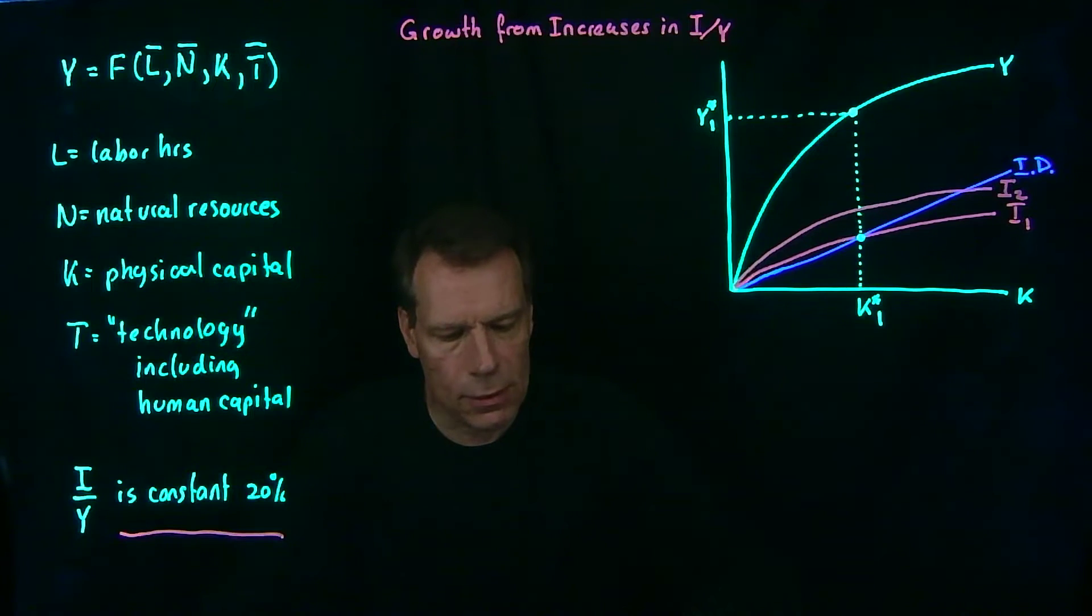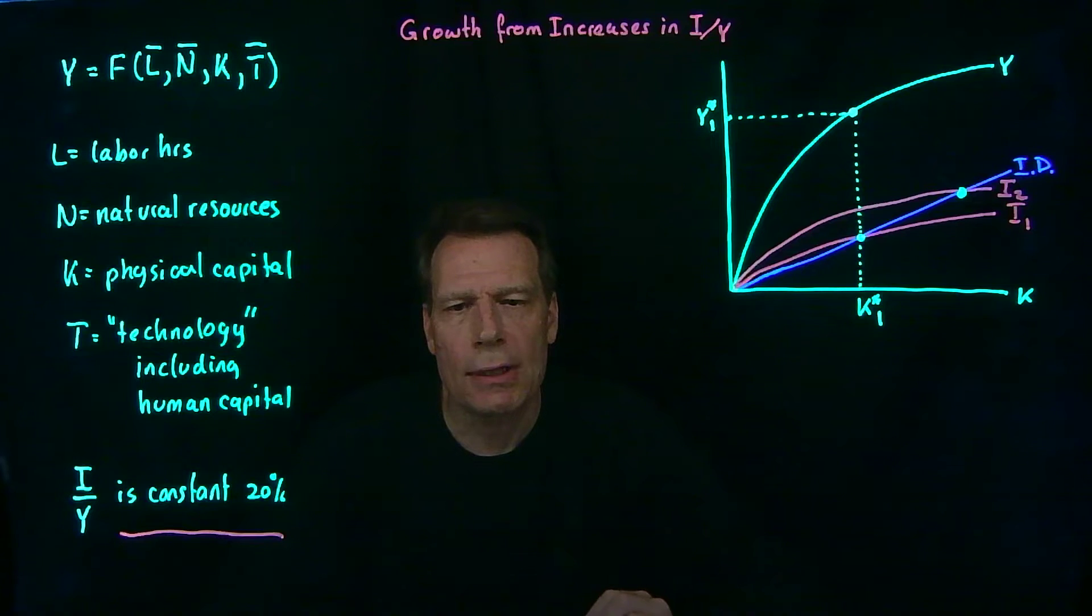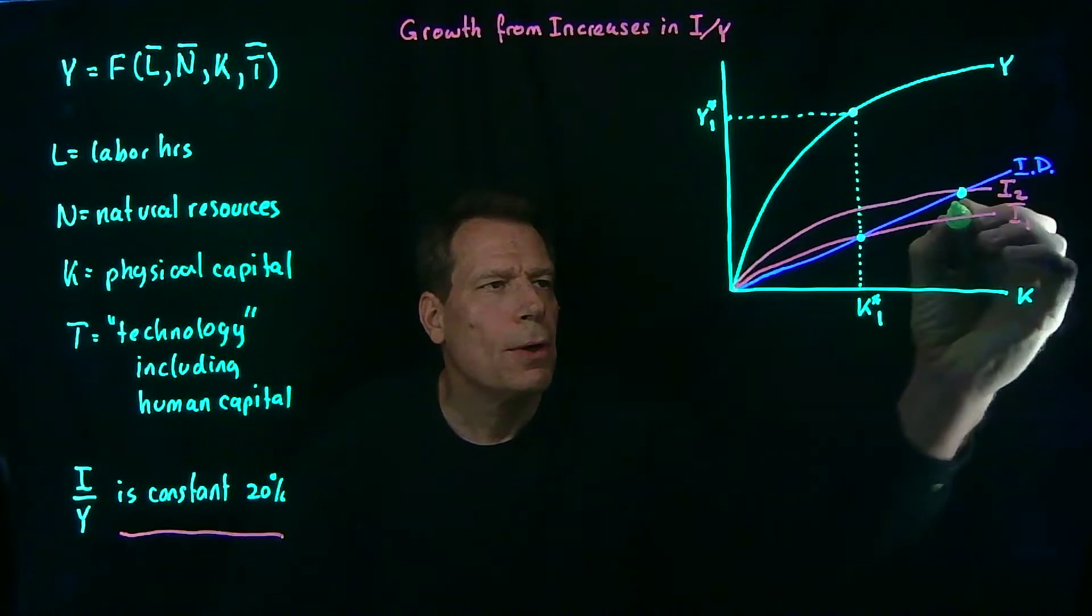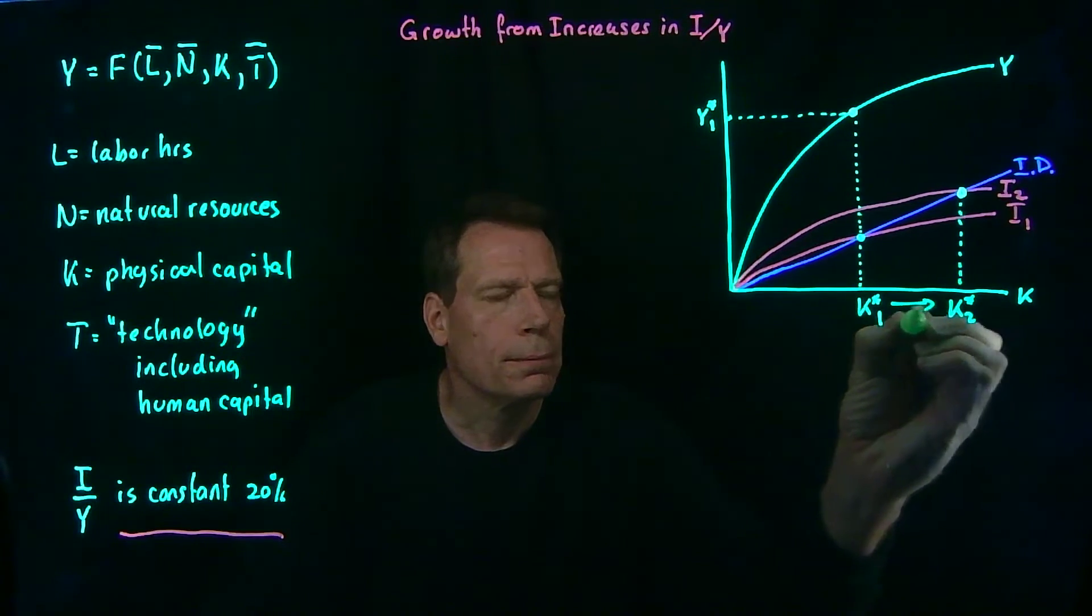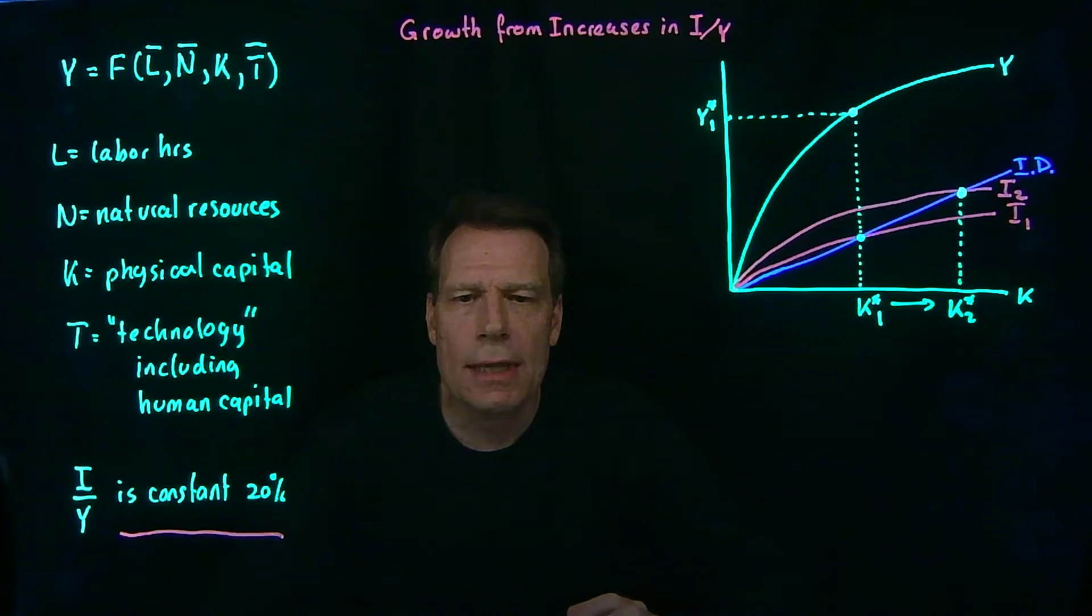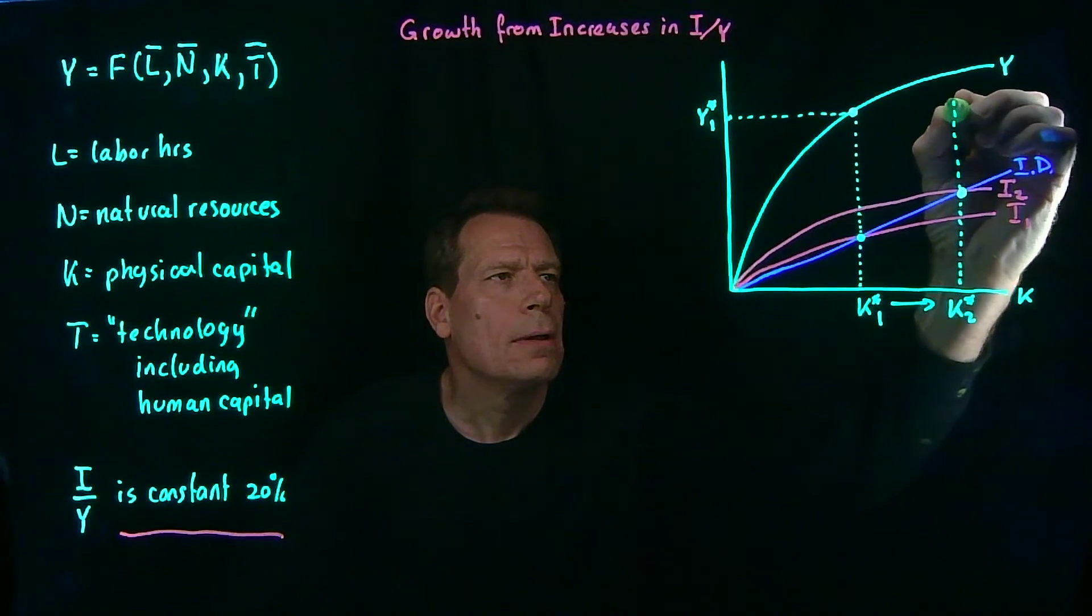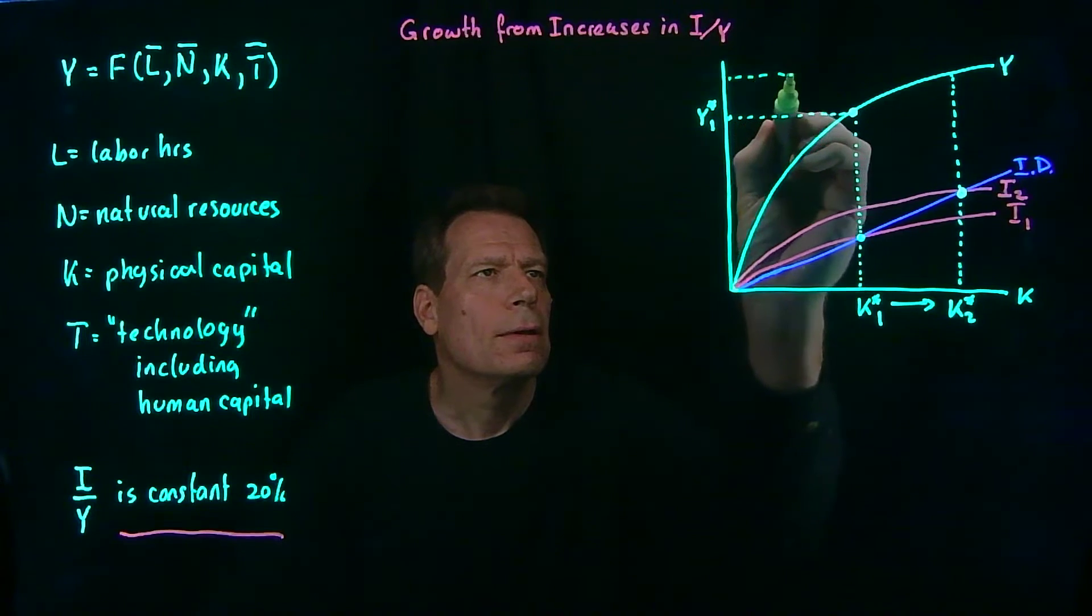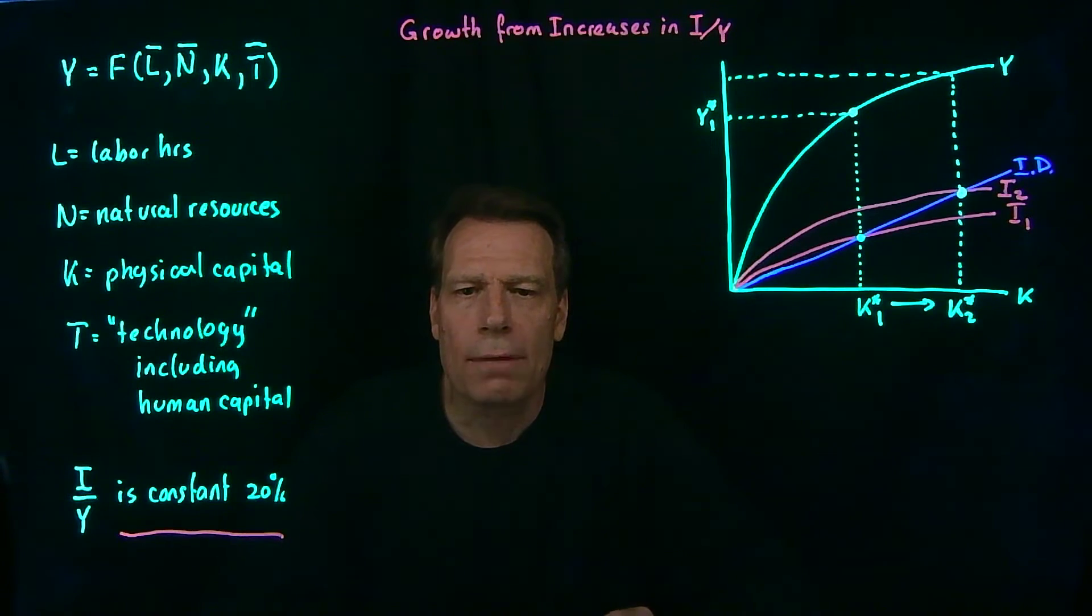And a new intersection with the investment depreciation line. We know that the steady state level of capital emerges at that intersection. So the steady state level of capital now increases to this new steady state level of capital. And at that new steady state level of capital we have a new steady state level of long-run natural level of GDP.